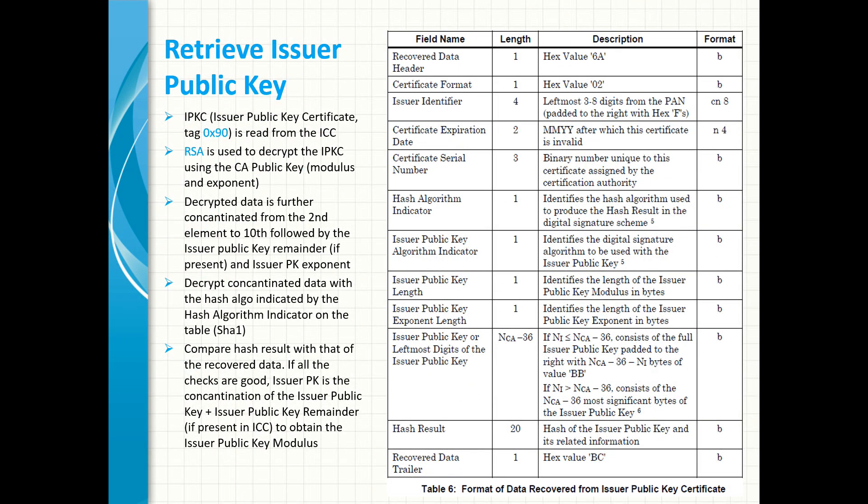The issuer public key certificate is read from the EMV card. It has a tag of 90 hex. It has to be decrypted with a public key from the certificate authority which was retrieved in the previous step. Decryption here is according to RSA. The recovered data has the structure as shown on the table. To confirm the data, a concatenation from the second element — the certificate format — down to the issuer public key, followed by the issuer public key remainder if present in the card, is done. The concatenated data is encrypted using a hash algorithm indicated by the indicator, which is mostly SHA-1. The hash of the encryption is also compared with the recovered data hash.